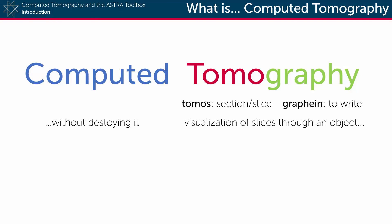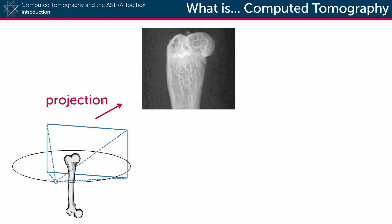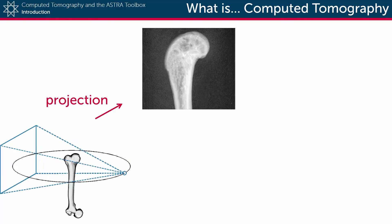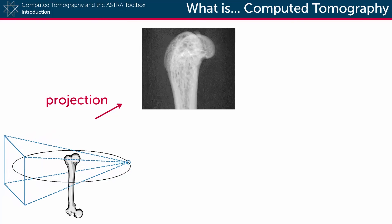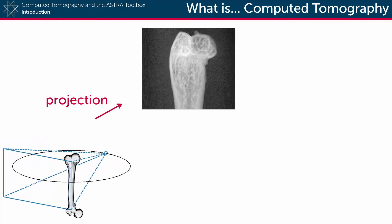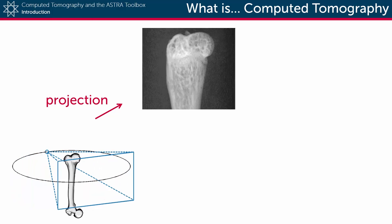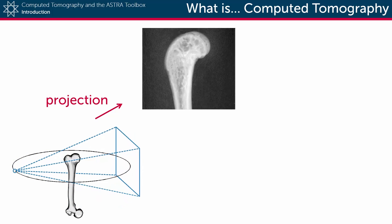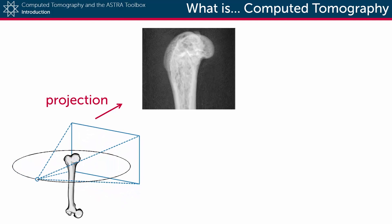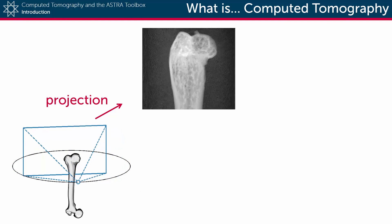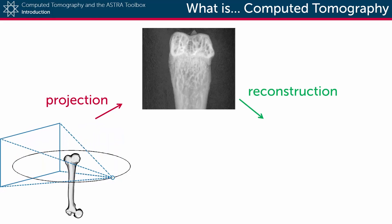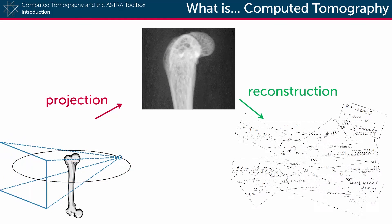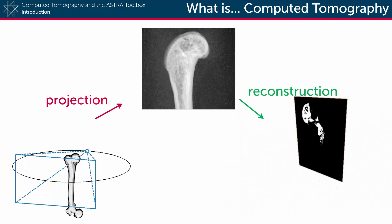In practice, an object — for example a femur bone — is placed between an X-ray source and an X-ray detector. These then start rotating, and X-ray projection images are acquired from all directions. Next, all this information is fed into a reconstruction technique, which does some mathematical magic, resulting in a virtual representation of the scanned object.